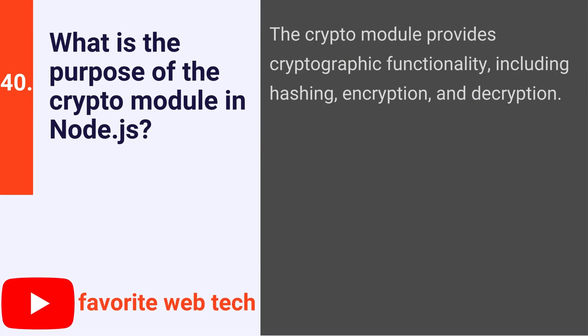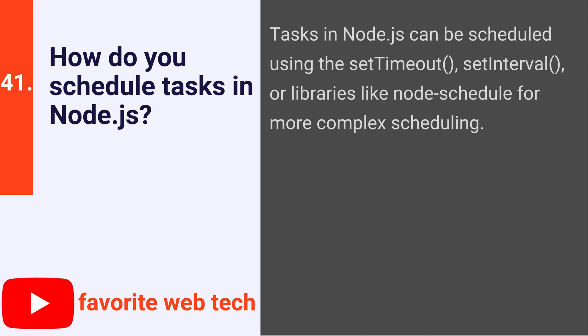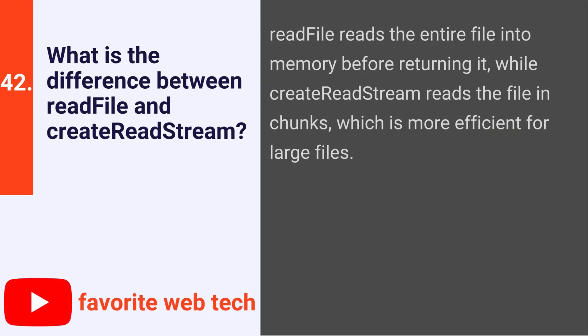What is the purpose of the crypto module in Node.js? The crypto module provides cryptographic functionality, including hashing, encryption, and decryption. How do you schedule tasks in Node.js? Tasks can be scheduled using setTimeout, setInterval, or libraries like node-schedule for more complex scheduling. What is the difference between ReadFile and CreateReadStream? ReadFile reads the entire file into memory before returning it, while CreateReadStream reads the file in chunks, which is more efficient for large files.